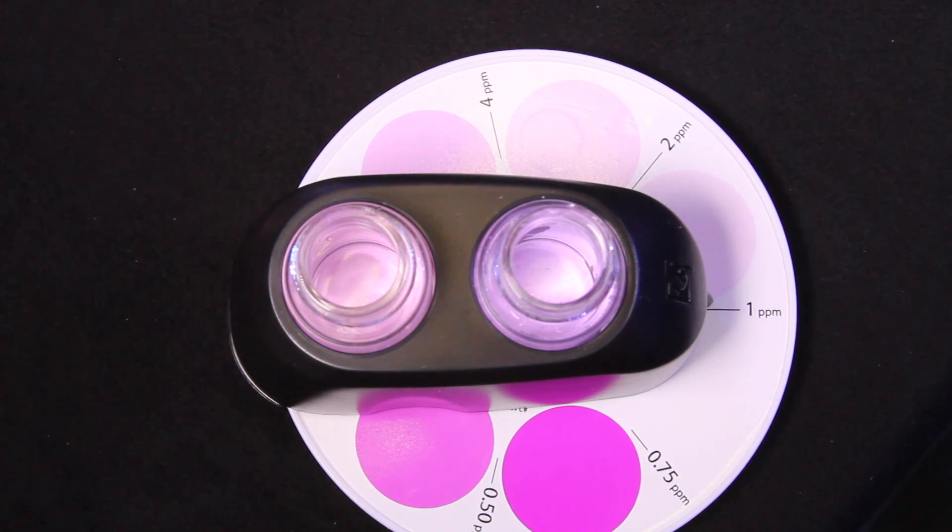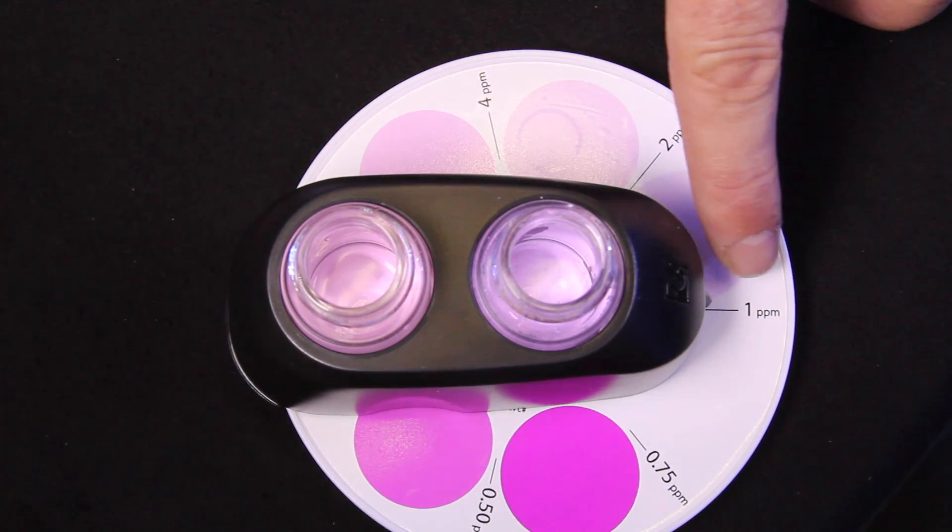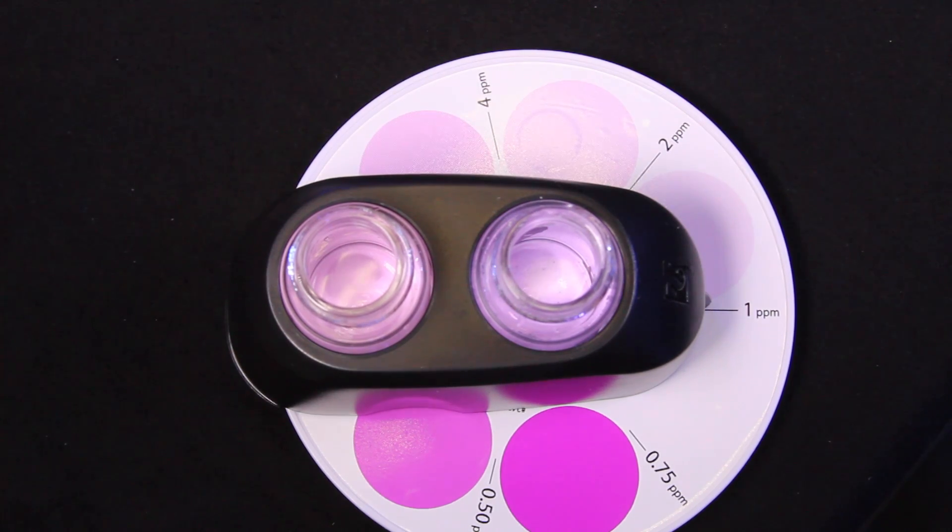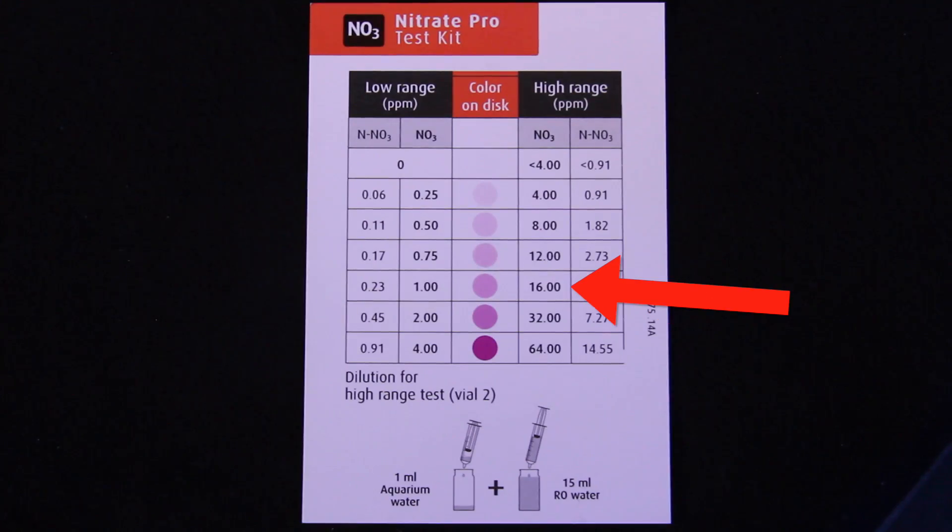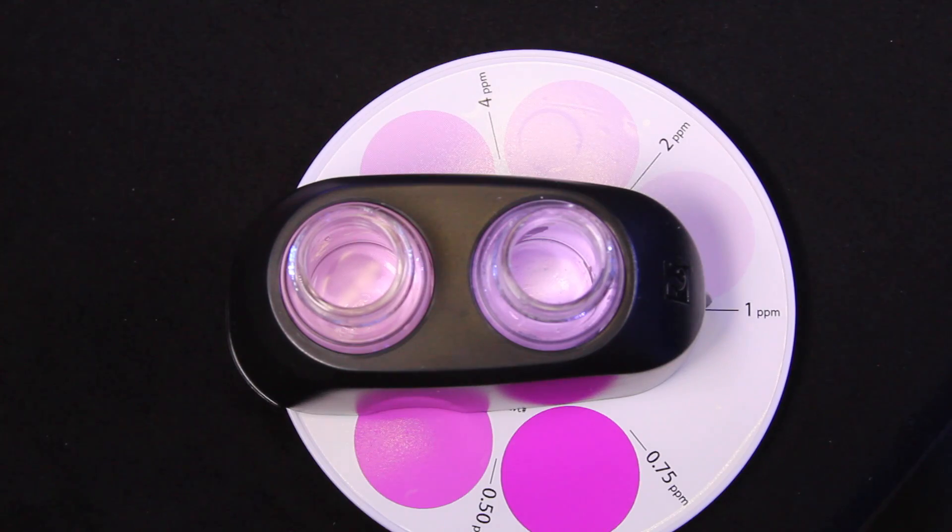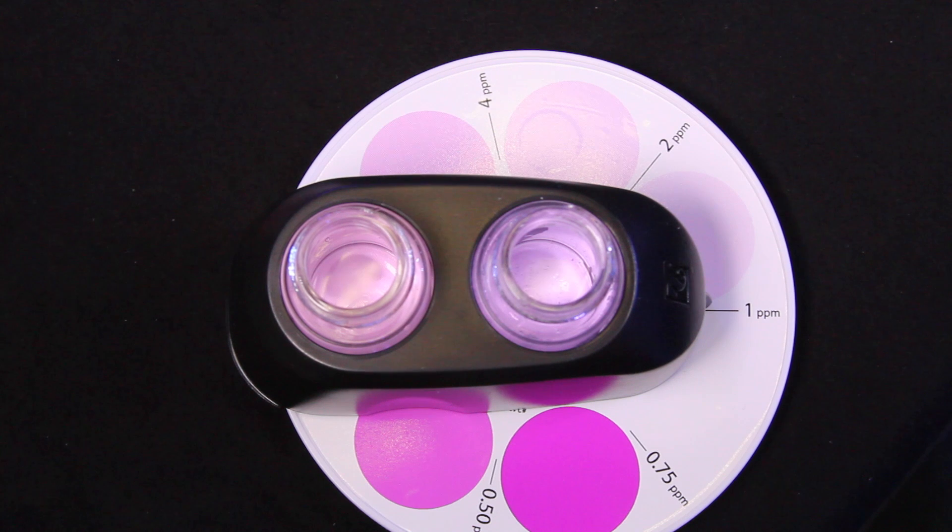All right so now we've done our high range nitrate test and we can tell by the card it points to 1 ppm but when we compare that to our chart we can tell that's actually a nitrate of 16 parts per million. Another thing I must mention is that when you're reading your levels it's good to look under a daylight setting around 6500 kelvin. Make sure you're not looking under a very blue light because obviously then it's going to be hard to interpret the accurate color of your test result. So now we know our nitrates are 16 parts per million. It's time for a water change on our reefer tank.